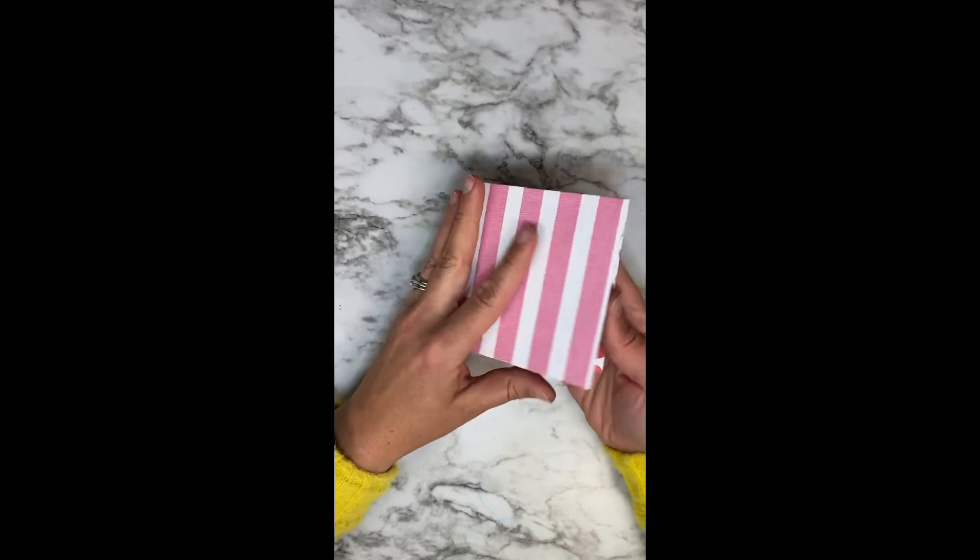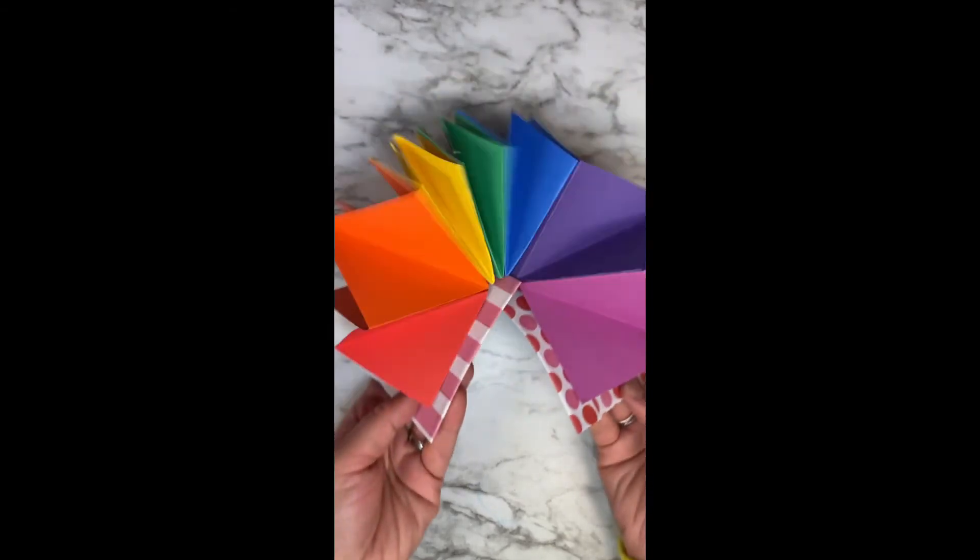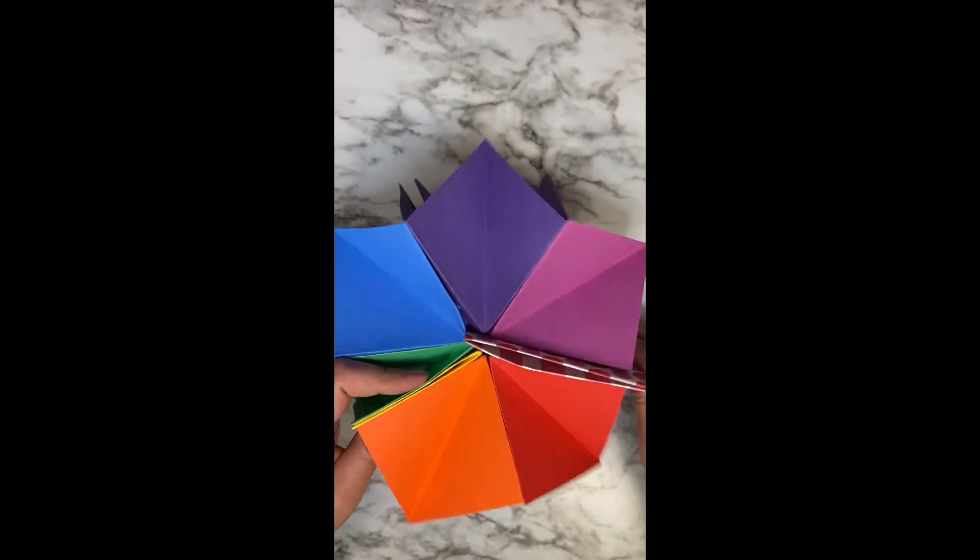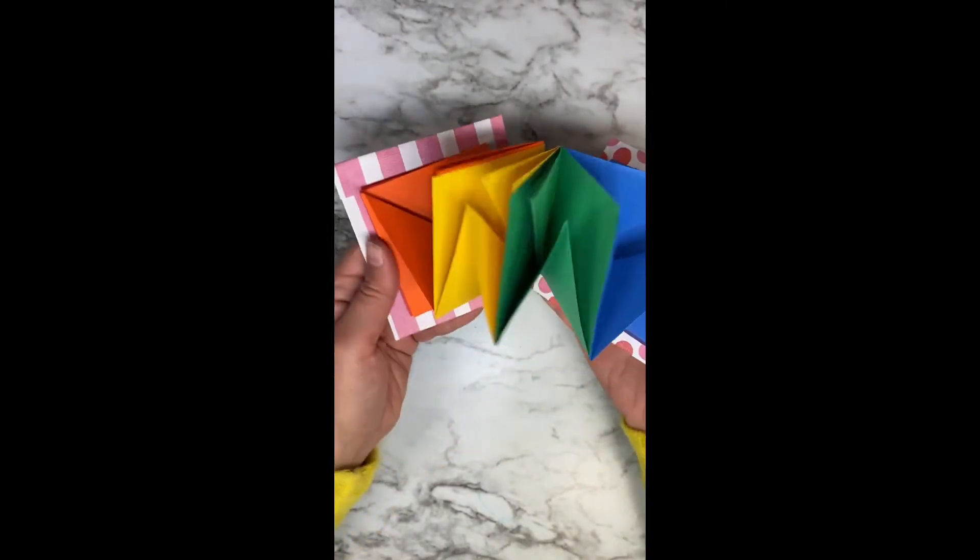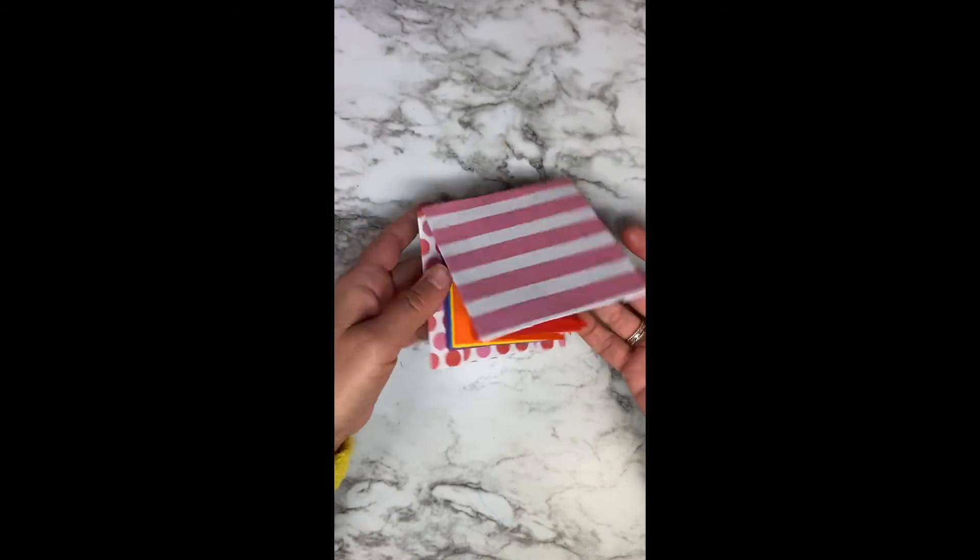And there you go. You have a hard cover book that opens up like a flower. It's got a front cover, a back cover. It's in rainbow order. You've taught 3D origami paper folding, a pop out book, whatever you want to call it.